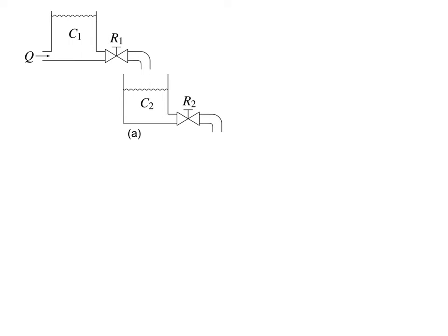We can come up with bond graphs for each of these subsystems and connect them through a signal bond. We first identify our distinct pressures in each system. There is a distinct pressure at the bottom of each of these accumulators, and also atmospheric pressure at the outlet of each subsystem. If we establish two zero junctions for each subsystem, at the first zero junction we have a flow source, and that flow is Q.